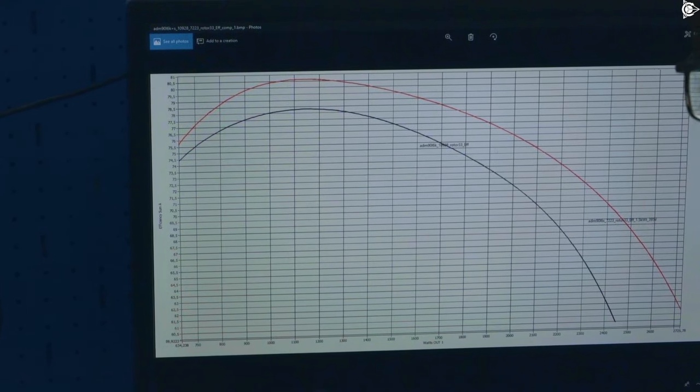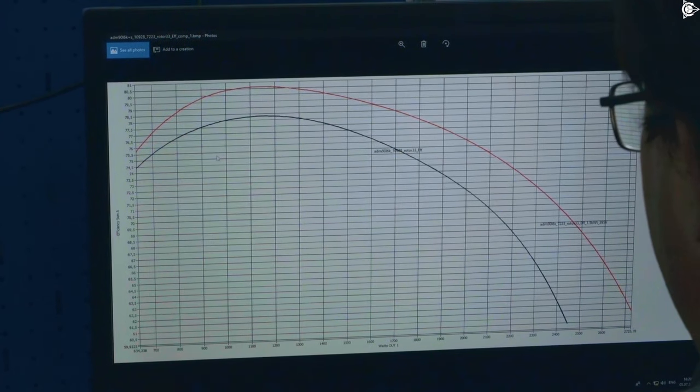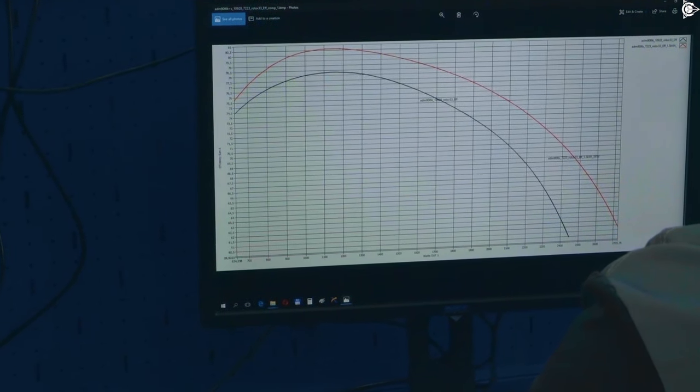And now I will show you what happens when everything is fine. In this case, the amount of copper is just right, so it's sufficient. And we can see that the efficiency graph for the Slavyanka motor is considerably higher than the classic motor with the black graph.